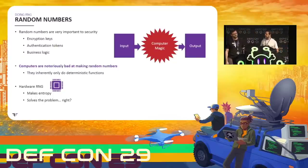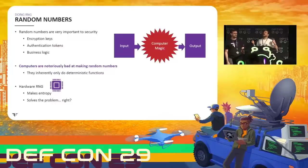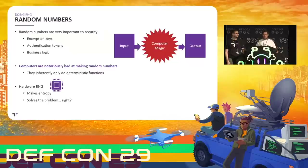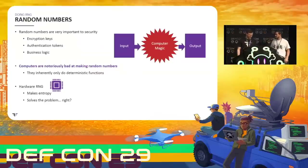There are some interesting things about random numbers. Computers are notoriously bad at making random numbers — for the task-based stuff I do, I rely on them being bad at this. In general you want a computer to do deterministic things. So if you need to actually get a random number out of a computer, you need some kind of hardware RNG to make entropy, which should solve the problem of getting random numbers, right?